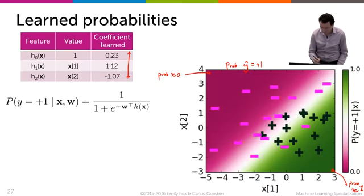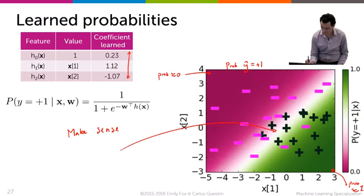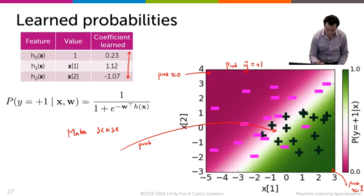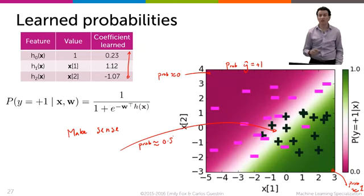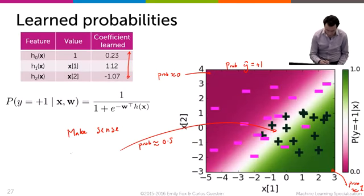So all that makes sense, and what makes most sense to me is that the region in between right here, that white region, this is the region where the probability is approximately 0.5, and so we're kind of uncertain as to whether we're positive or negative. It's a pretty wide region of uncertainty.